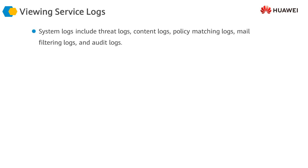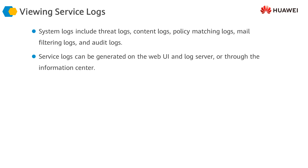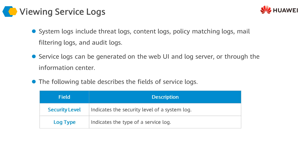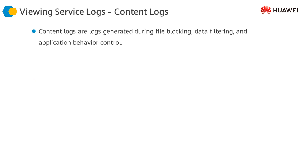If you want to view the service logs, service logs include threat logs, content logs, policy matching logs, mail filtering logs, URL filtering, and audit logs. USG can generate service logs onto the web user interface, onto a log server, or through the information center. By viewing service logs, administrators can obtain service running status and network status. Important fields of service logs include the security level and the log type.